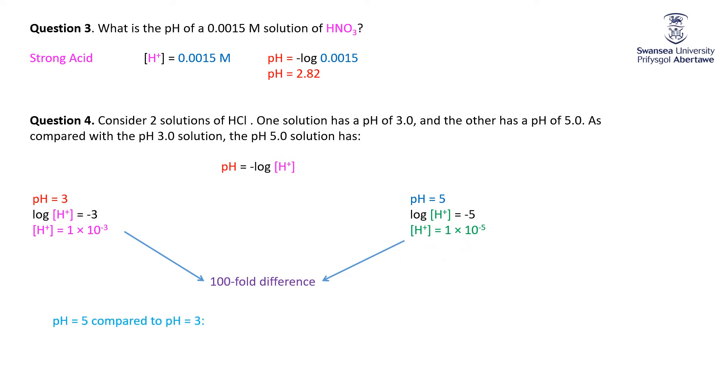Thus the correct statement is, for the pH of 5 compared to the pH of 3, it has a hundred times lower H-plus. Difference of 2 in the pH is a difference of 10 to the 2 in terms of the H-plus concentration.